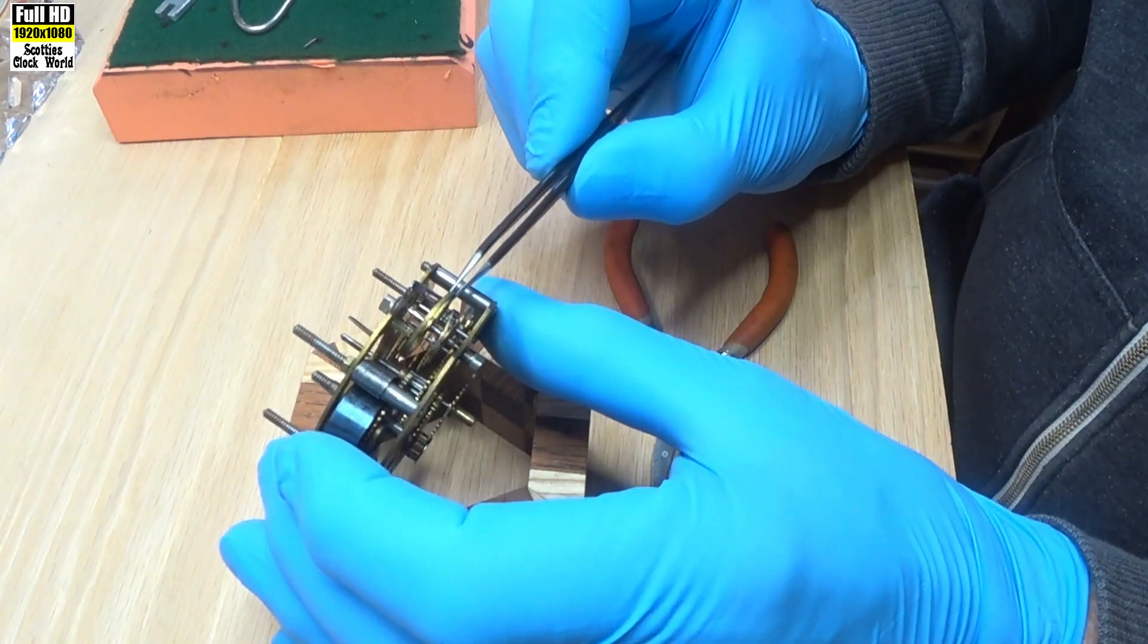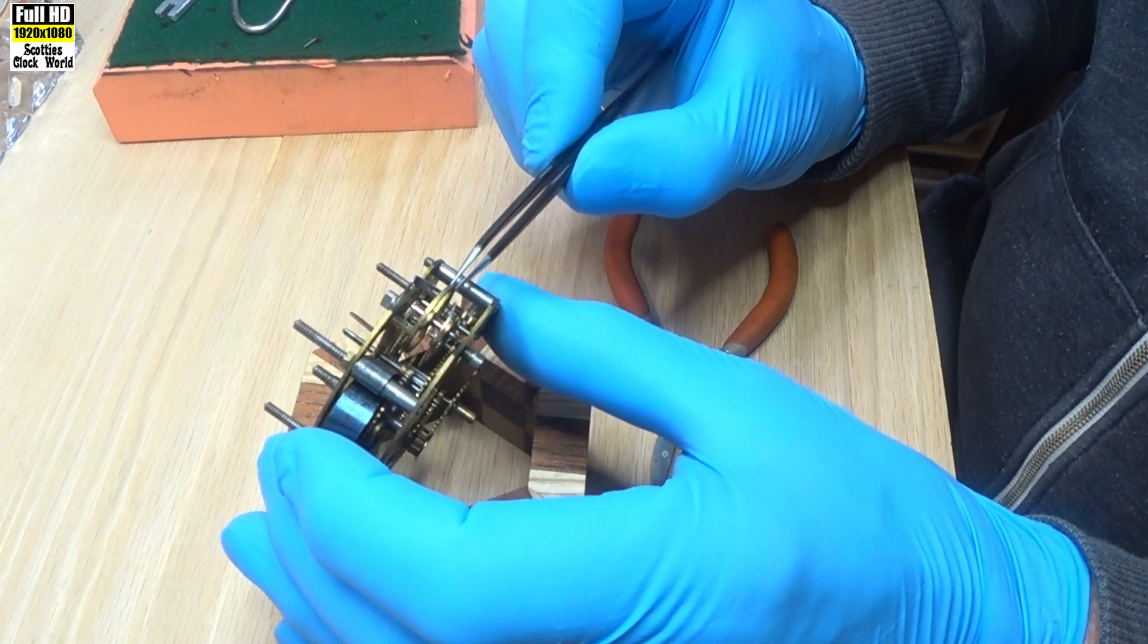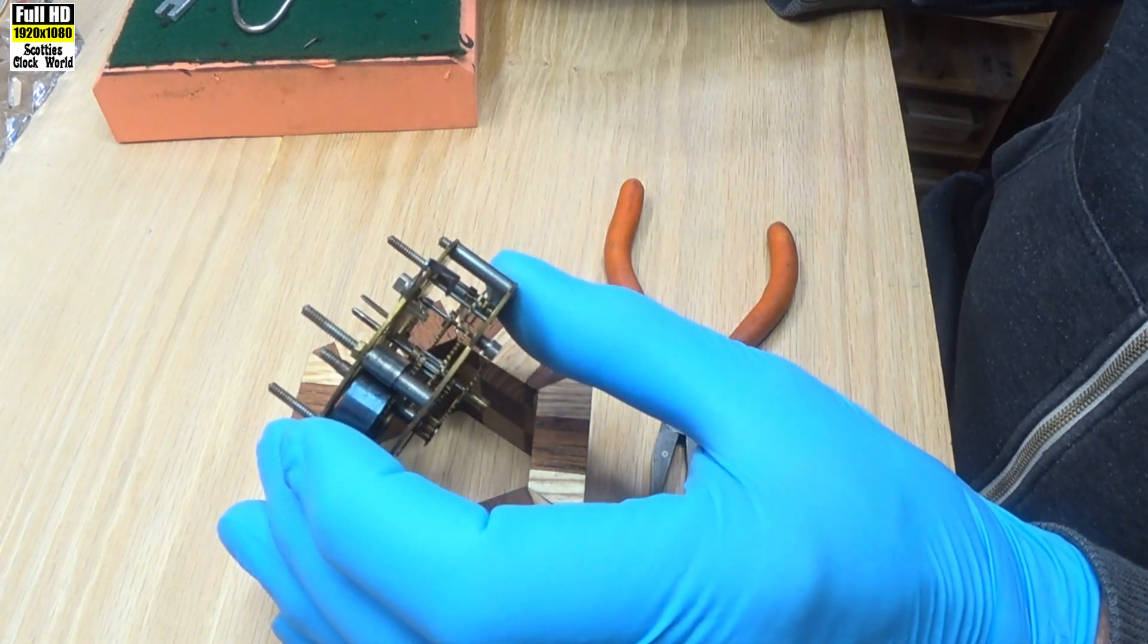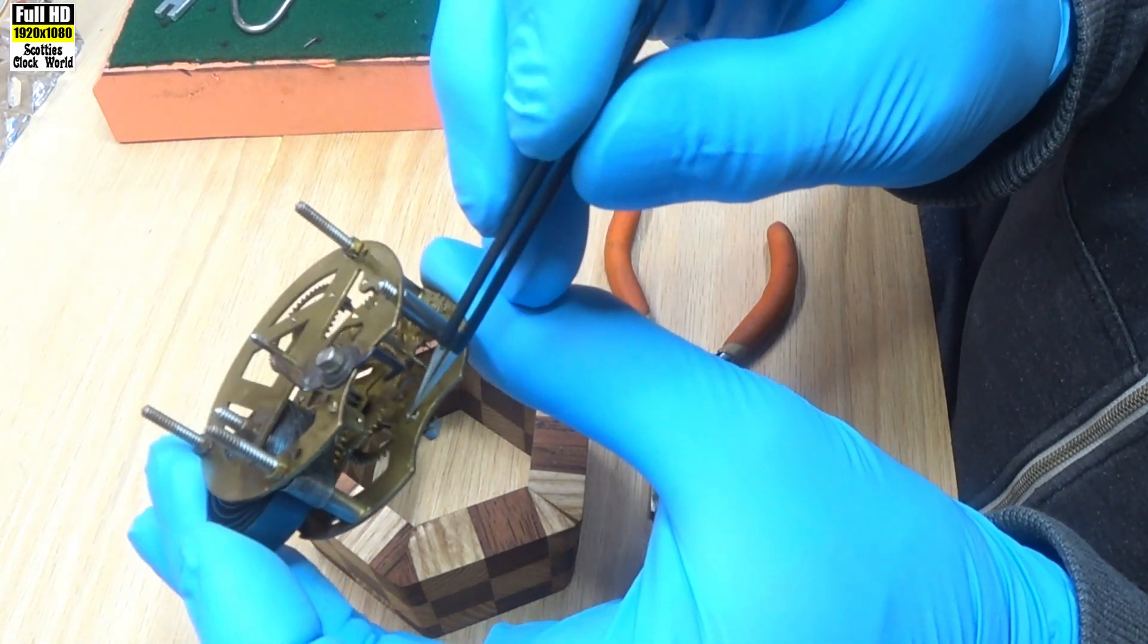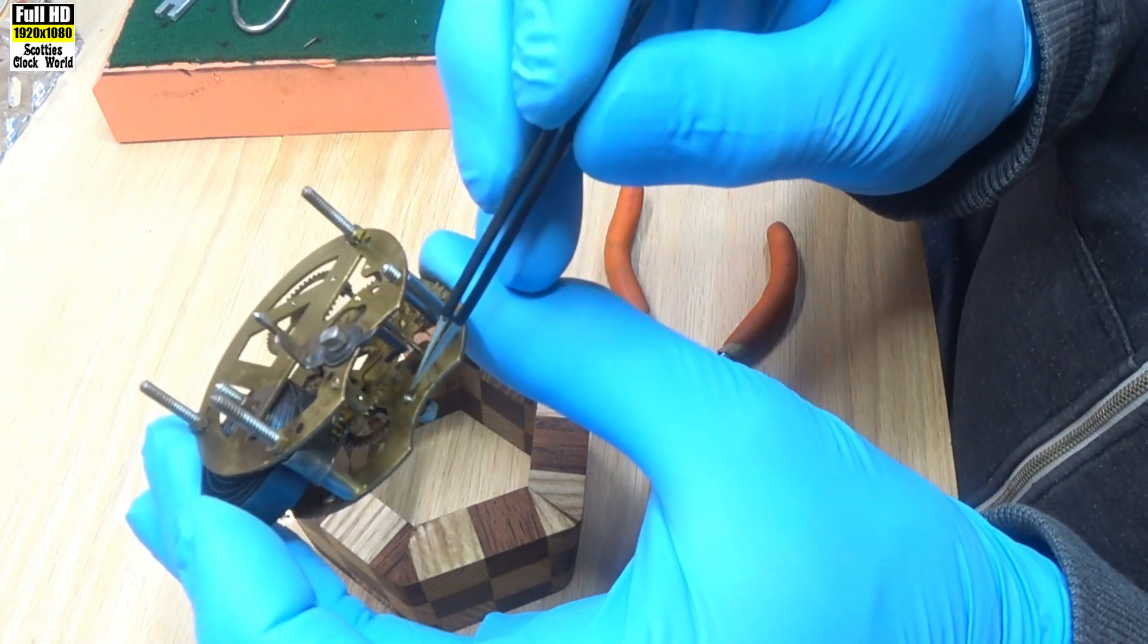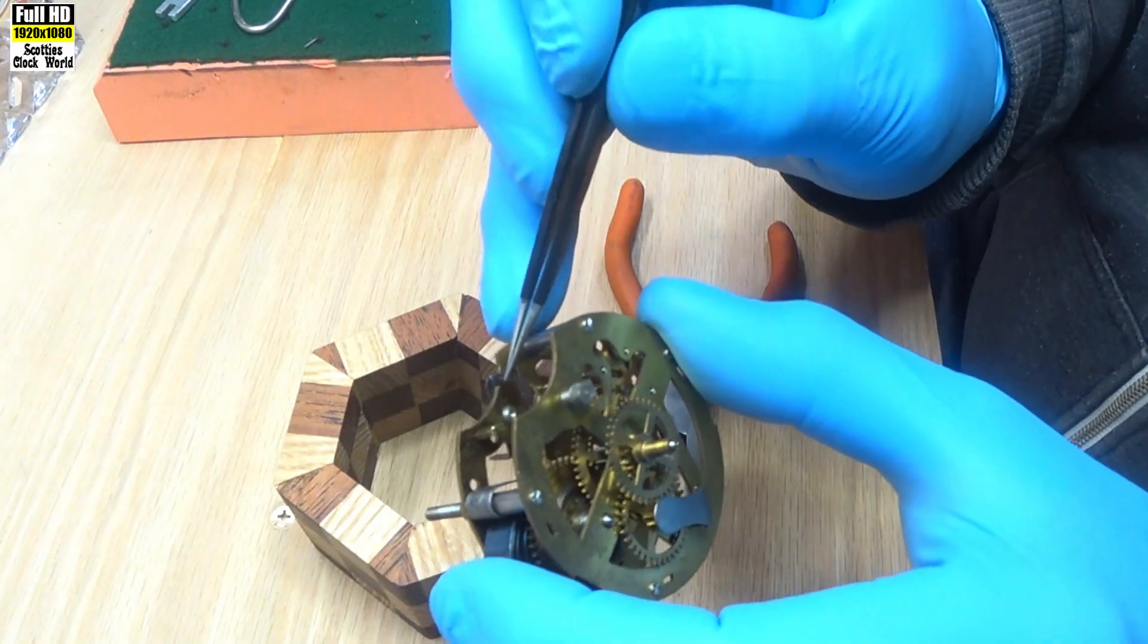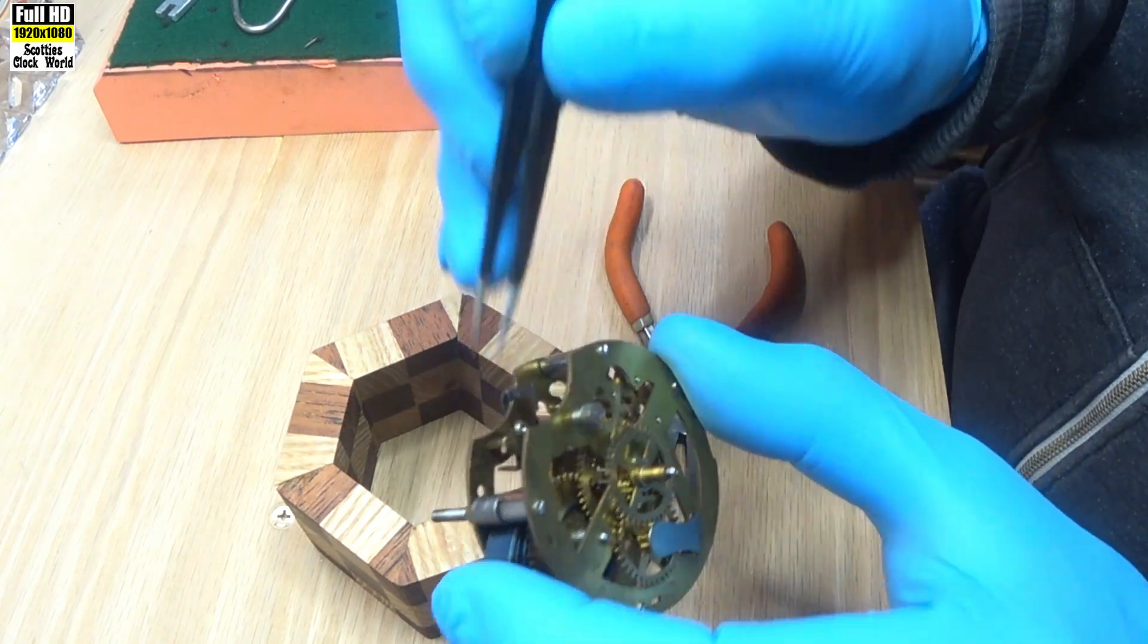The balance wheel fits in there between that pivot there and that pivot there.